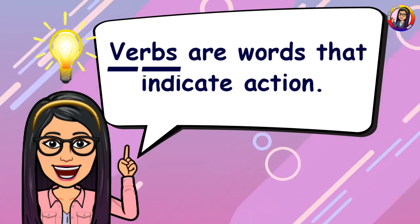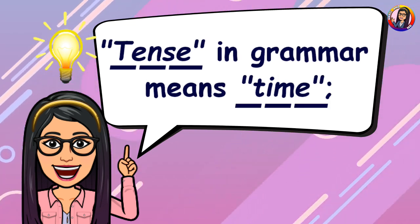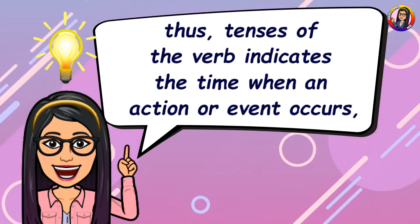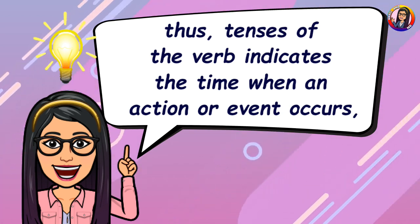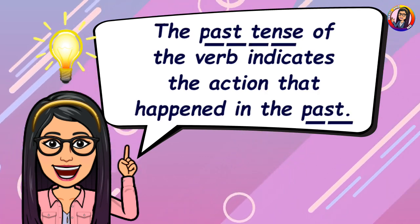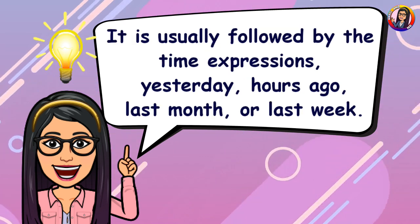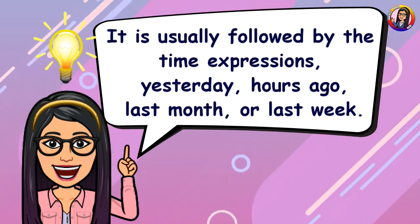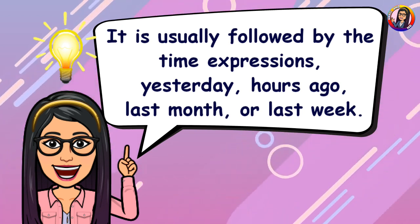Remember, verbs are words that indicate action. Tense in grammar means time. Thus, tenses of the verb indicate the time when an action or event occurs, or when a state or process holds. The past tense of the verb indicates an action that happened in the past. It is usually followed by time expressions such as yesterday, hours ago, last month, or last week.